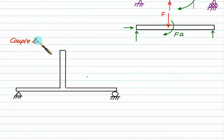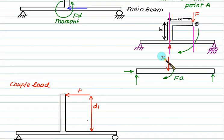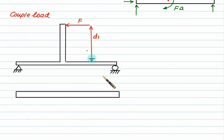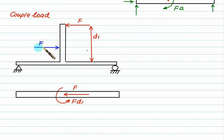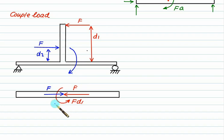The last load type is a couple load, which consists of two equal and opposite forces. Suppose one force F is offset from the main beam by distance D1, and an equal and opposite force F is offset by distance D2. Using the same moment-shifting concept, shift force F to the common point without change in magnitude and direction — this produces a clockwise moment F × D1. The equal and opposite force F is similarly shifted, producing a clockwise moment F × D2 at the common point.